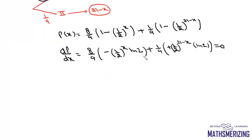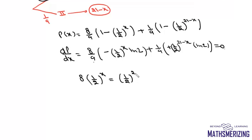Setting dp/dx equal to zero, the (1/9) ln2 terms cancel, giving us 8 times (1/2)^x equals (1/2)^(21 minus x). Since 8 equals 2^3, we can write 1/(2^(x-3)) equals 1/(2^(21-x)).